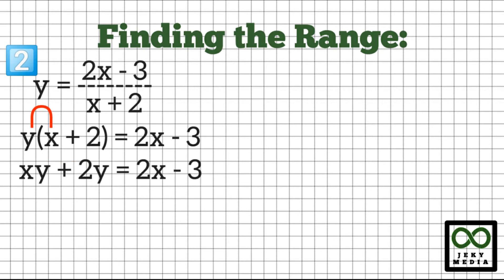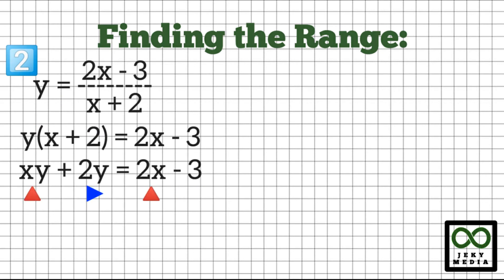y times x is xy, and y times 2 is 2y. Copy the right side: 2x minus 3. Combining similar terms will give you xy minus 2x is equal to negative 2y minus 3.